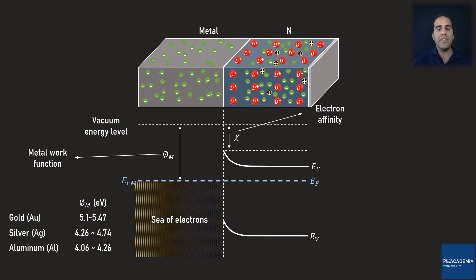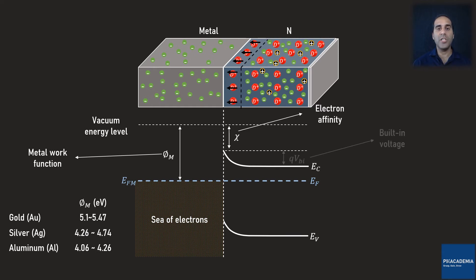Once the alignment of the Fermi levels happened, a depletion region forms in the n-type semiconductor but not in the metal, and an electric field directed from the edge of the depletion region in the n-semiconductor to the junction of the metal semiconductor is formed. This electric field corresponds to the built-in voltage of this Schottky junction. In the energy band diagram, you can see that the conduction energy level is bent down. The difference between the original conduction energy level and the conduction energy level after the formation of the junction is QV sub Bi, or the built-in voltage.